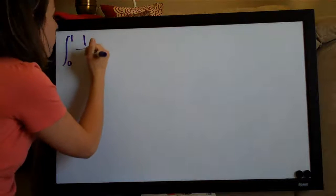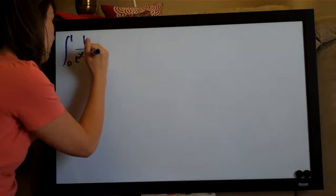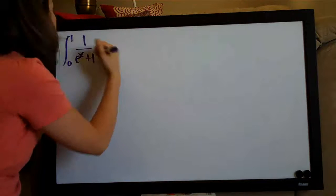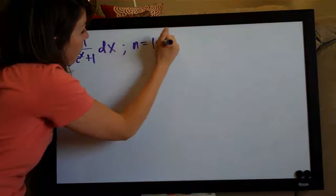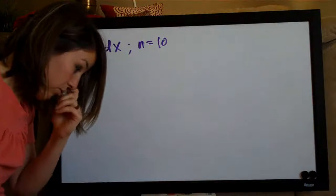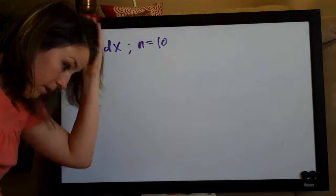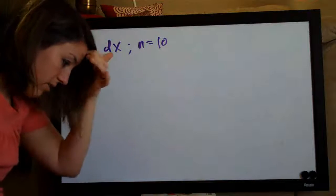Hi everyone! Welcome back to IntegralCalc.com. We're going to be doing another trapezoidal rule problem today. This one, the function that we're given is the integral from zero to one of one over e to the x plus one dx where n equals ten.